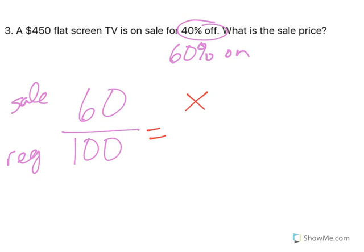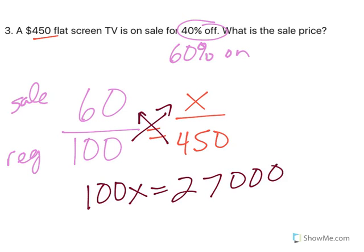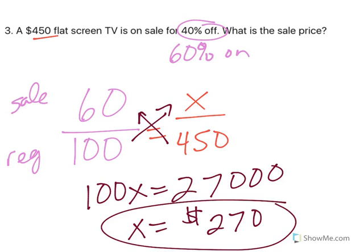What is the sale price? I don't know, but I know it was $450 originally. So I cross multiply: 100X equals 27,000. Divide both sides by 100 and we're at $270 for the sale price of our TV.